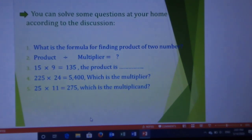You can solve some questions at your home according to the discussion. Number one: what is the formula for finding product of two numbers? Number two: product divide multiplier equal what? Number three: 15 × 9 = 135, the product is dash. Number four: 225 × 24 = 5400, which is the multiplier? Number five: 25 × 11 = 275, which is the multiplicand?